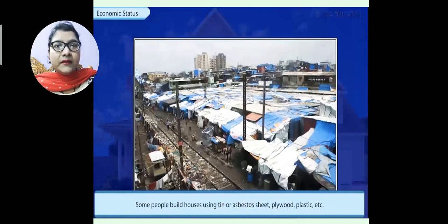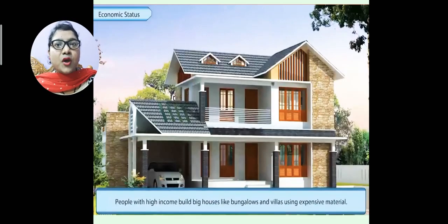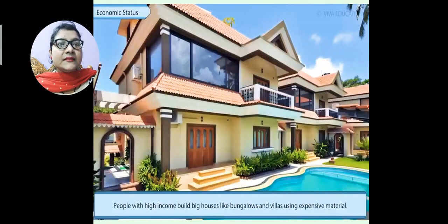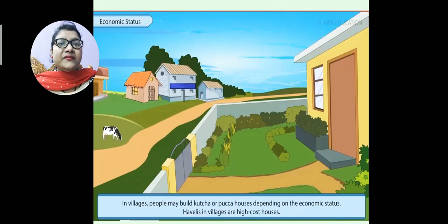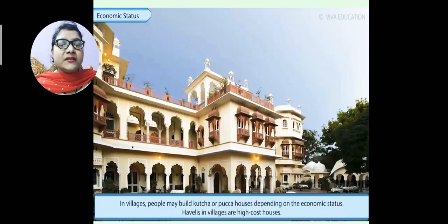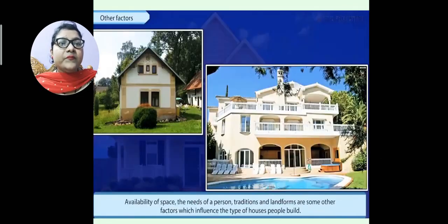People with high income make big houses like bungalows and villas, using expensive materials like tiles and marble. In villages, people make kacha or pakka houses according to their income — how much money they earn or want to spend while building their house. The haveli is a high-cost house found in villages.